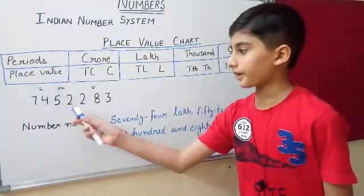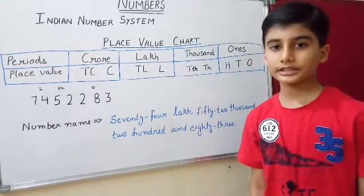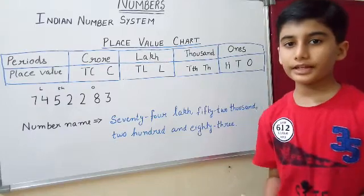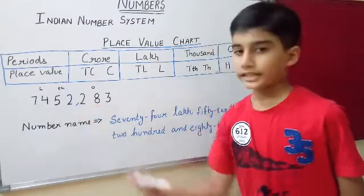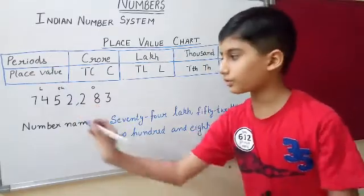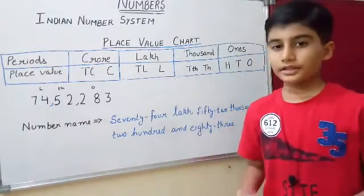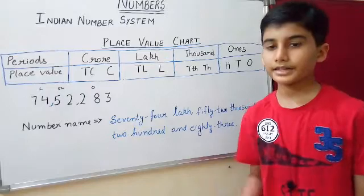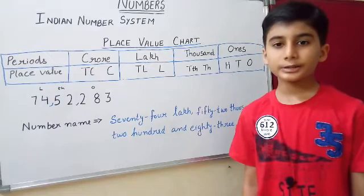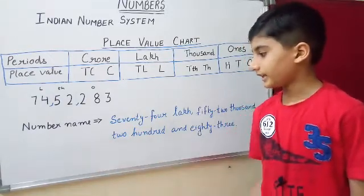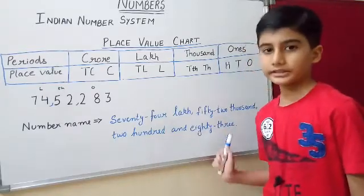Let us take the number 7,452,283. Now let us convert this number into standard form. First we insert a comma after three digits, then we insert a comma after every two digits. Now we have divided the number into three periods: ones, thousands, and lakhs. With the help of these periods we are able to write the number name: 74,52,283.